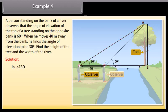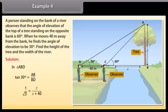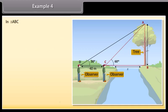In triangle ABD, tan 30 degrees equals AB upon BD. 1 upon square root of 3 equals Y upon X plus 40, which implies X plus 40 equals Y into square root of 3. This is equation 1. In triangle ABC, tan 60 degrees equals AB upon BC, that is, square root of 3 equals Y upon X, which implies Y equals X into square root of 3. This is equation 2.